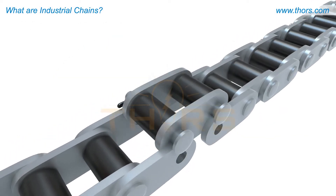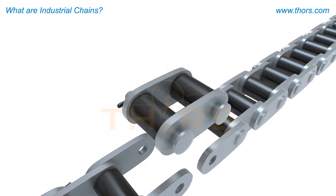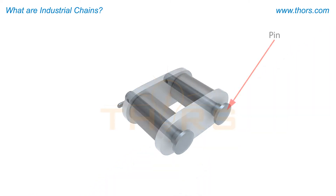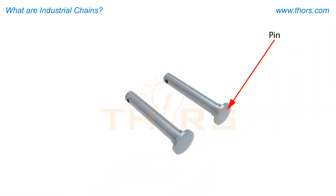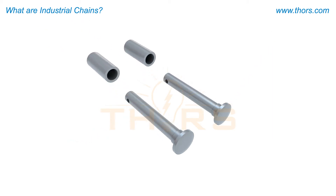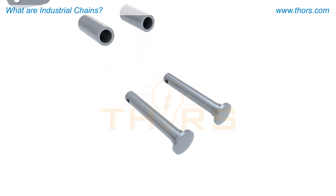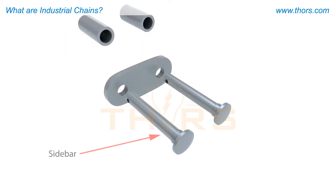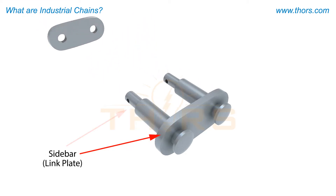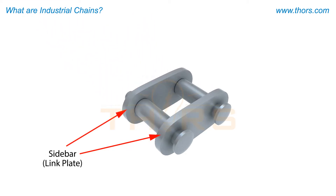Chains are made of a series of connected metal links, and each link is connected by a pin. A bushing covers the pins. A sidebar, or link plate, is the side piece of a chain that is connected by the pins.